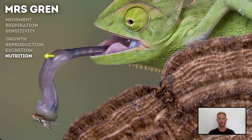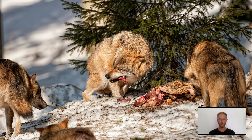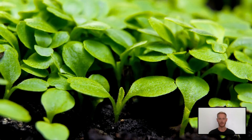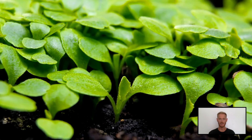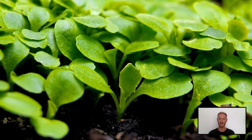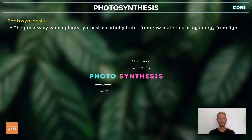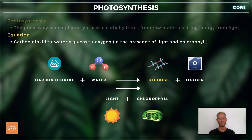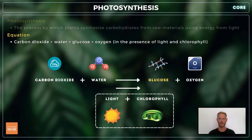All living organisms require food so that they have the raw materials to build new cells and the energy to sustain life. Animals digest their food and absorb nutrients internally, while plants make their own using gases in the air and water and minerals in the soil. Photosynthesis is defined as the process by which plants synthesize carbohydrates from raw materials using energy from light. The chemical equation states that carbon dioxide and water combine to make glucose and oxygen in the presence of light energy and chlorophyll.